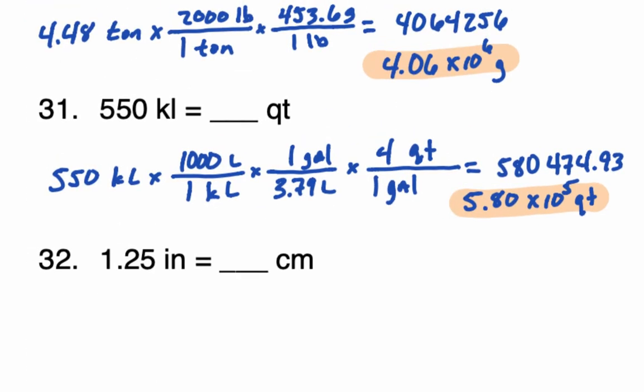So keep in mind, as you go through and solve problems for the rest of the year, make sure your calculator is in scientific notation mode and make sure you are using the correct number of significant digits. If it is a conversion, you are going to use the initial value you are converting to determine the final number of significant digits in your answer.